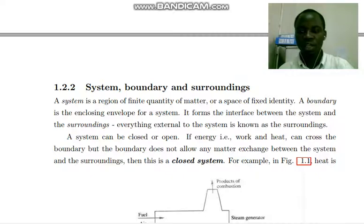A system can either be closed system or open system. If the energy in form of work and heat can cross the boundary, but the boundary does not allow any matter exchange between the system and the surrounding, then this is called closed system.